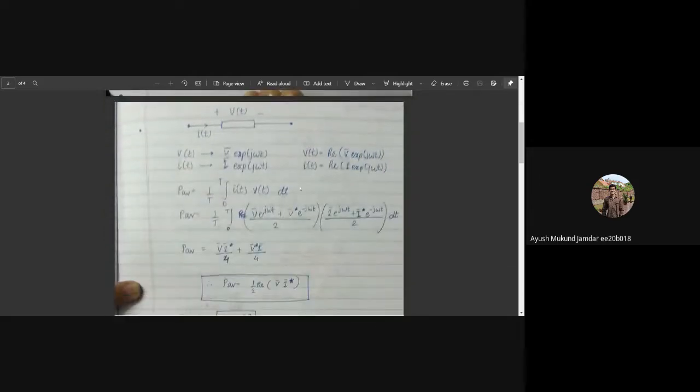Based on that, let's analyze a general load having impedance Z with V of T potential drop across it and current I of T. In phasors, V of T can be represented as V bar exponential j omega t, and I bar exponential j omega t for current. Power instantaneously is actual current times actual potential drop. Average power will be small I of T times small V of T dt, integration 0 to T, 1 by T to get the average power over the time period.